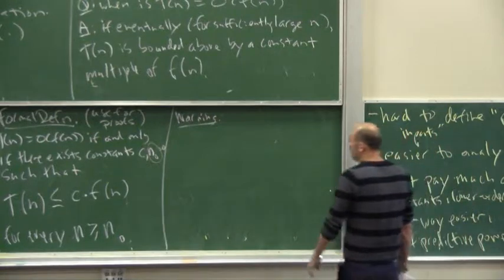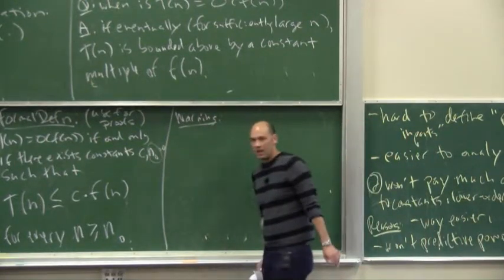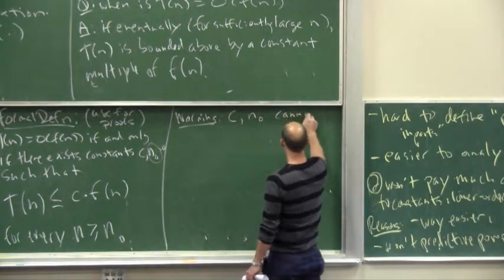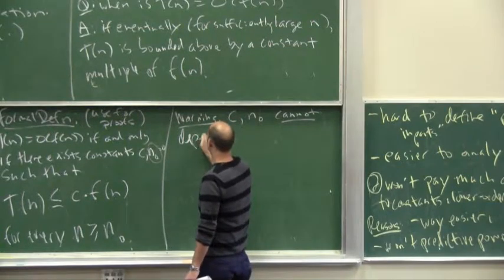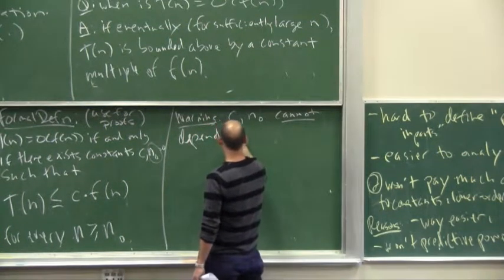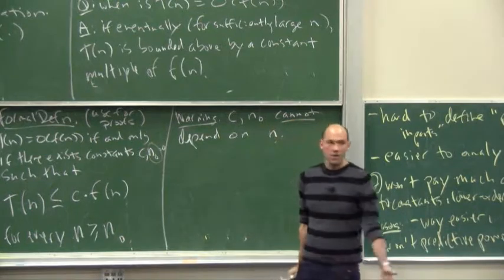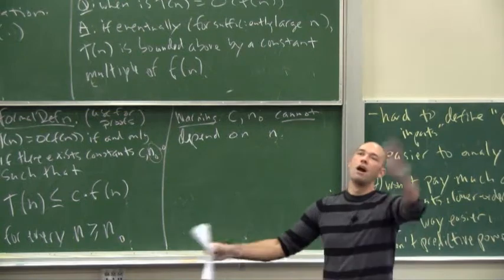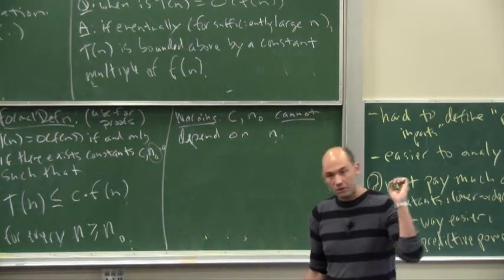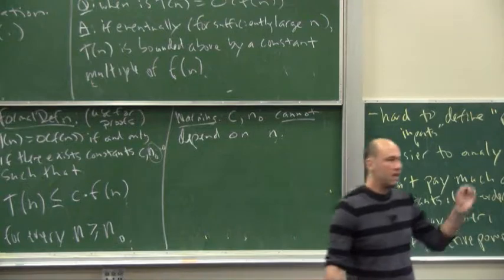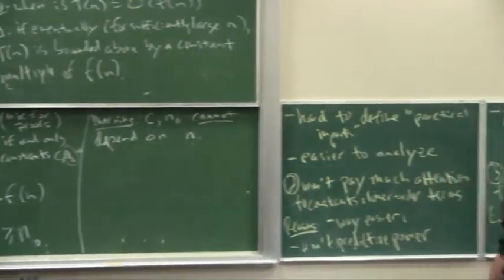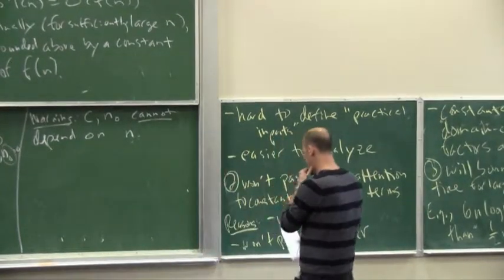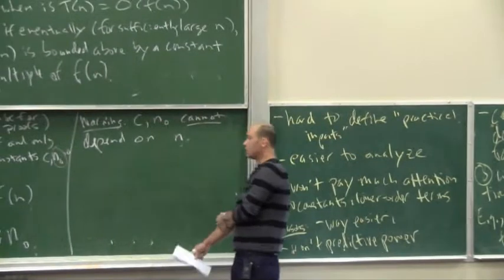So first of all, what do I mean by constants C and n₀? What I mean is that C and n₀ cannot be functions of n, cannot depend on n. C could be a hundred, n₀ could be a million, but then we're thinking about values of n which are just unboundedly large. So if you ever find yourself using Big O notation with a proof and you say set C equal to something which has an n in it, it's an incorrect answer. I guarantee it. So that's something to watch out for, some troubleshooting.